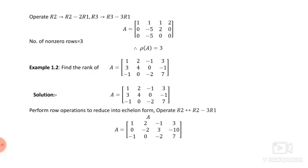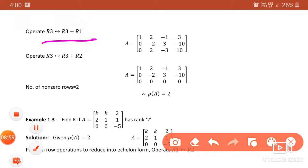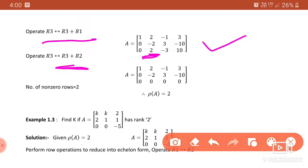Then operate R3 → R3 + R1 to get [1 2 -1 3], [0 -2 3 -10], [0 2 -3 10]. Now apply R3 → R3 + R2: -2+2=0, 3+(-3)=0 wait, -3+3=0, and 10+(-10)=0. So the last row becomes completely zero. How many non-zero rows? Rows 1 and 2, so rank of this matrix is 2.